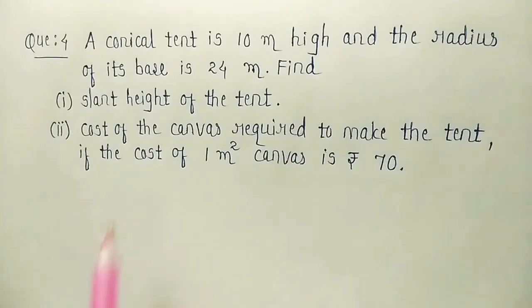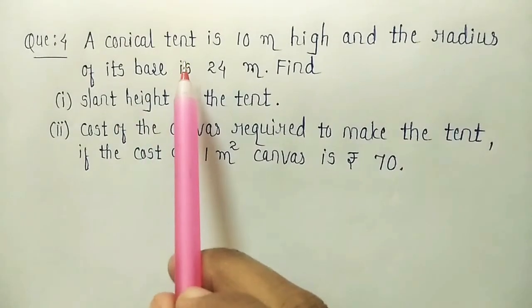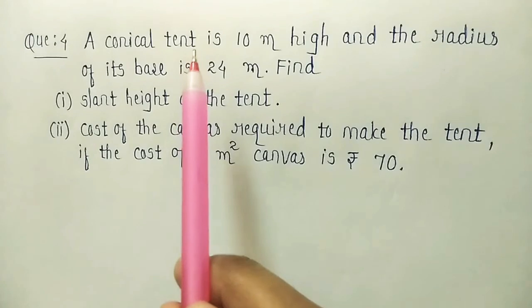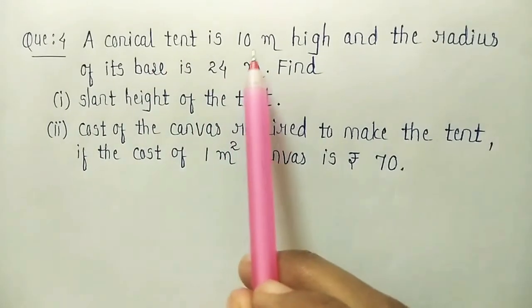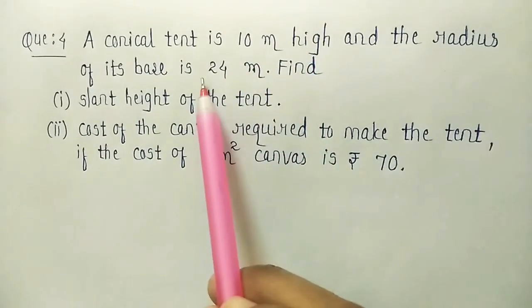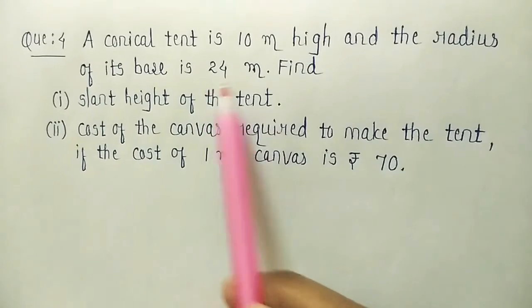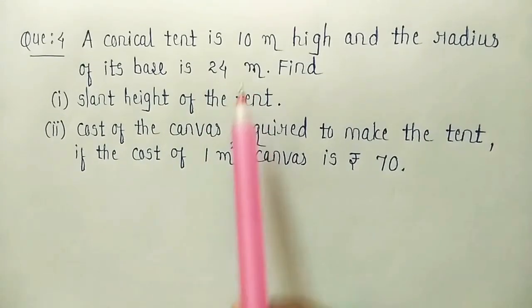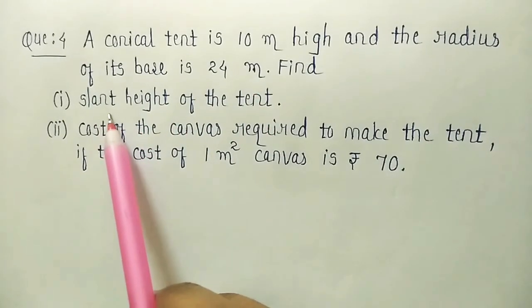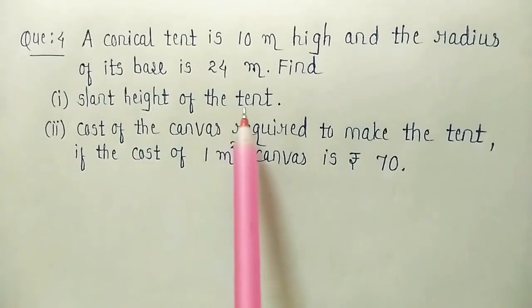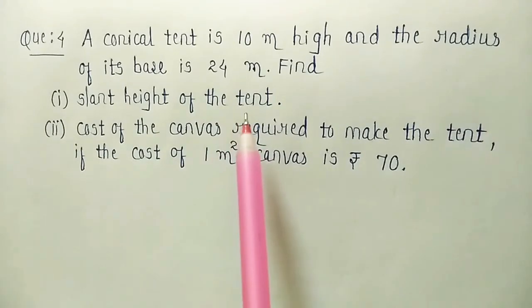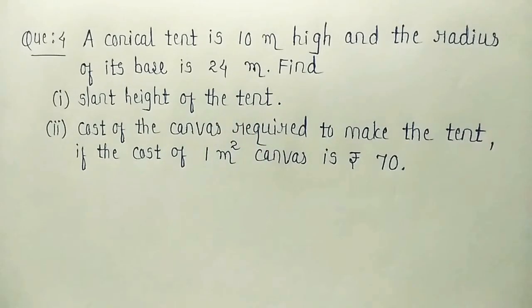Now here there is a conical tent in the shape of a cone, right, is 10 meter high and radius is given as 24 meter. Two things we have to find in which first is the slant height of the tent. We know the formula to find slant height. So let us find slant height first.